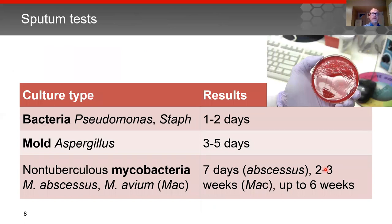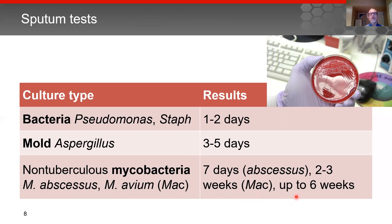Sputum that is collected is generally sent to the microbiology laboratory. It is initially smeared on a glass slide and stained for a variety of organisms, with results that can come back the same day. Cultures streaked onto a petri dish can take longer: regular bacteria like Pseudomonas or Staph take about one to two days; molds like Aspergillus take three to five days; and non-tuberculous mycobacteria such as Mycobacterium abscessus or Mycobacterium avium complex (MAC) can take seven days for rapid growers like abscessus, or two to three weeks for MAC. Plates are held up to six weeks to detect more slowly growing organisms.